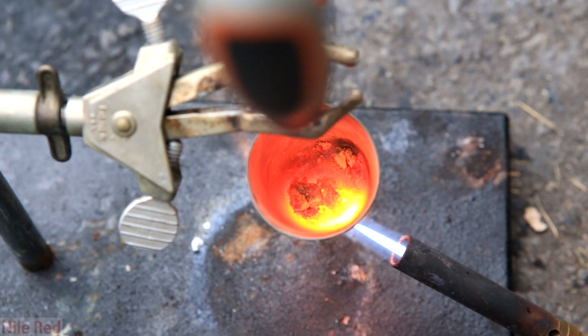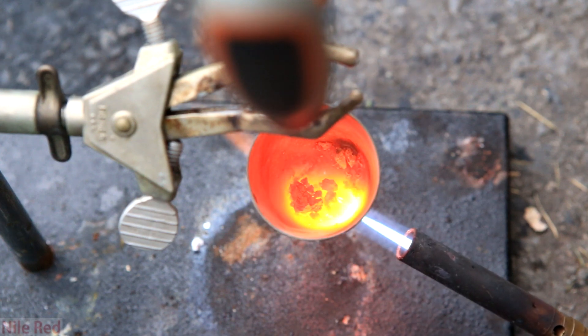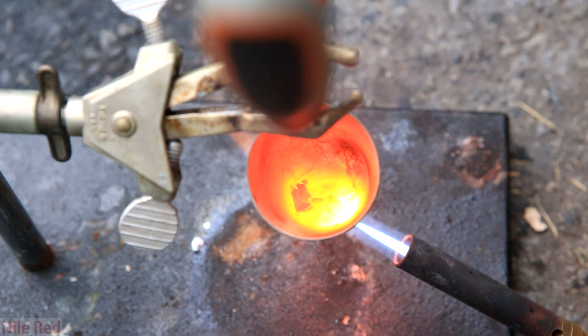To prevent the oxidation, the bismuth metal must be melted under an inert atmosphere. Using an inert atmosphere isn't the easiest for the average person, so I found a way around this.